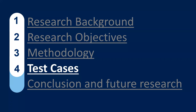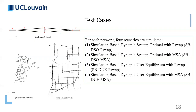We apply our methodology to a few test networks. We test our algorithm on three networks: first, a Braess-like network, then a random network, and finally the Sioux Falls road network. For each network, four scenarios are simulated: first, a simulation-based dynamic system optimal with the P-swap swapping algorithm; second, the dynamic system optimal with the method of successive averages (MSA); third, the dynamic user equilibrium with P-swap; and lastly, dynamic user equilibrium with MSA.